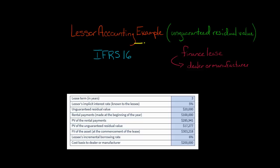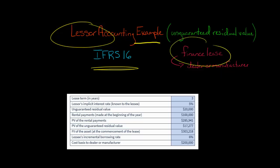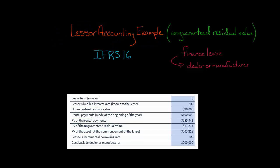In the last video, we discussed an example of how a lessor would account for a lease under IFRS 16 if it was a finance lease and the lessor was a dealer or manufacturer and there was a guaranteed residual value. Now I want to do an example where everything else is the same except we have an unguaranteed residual value. That's going to affect the amount of sales revenue and cost of goods sold that gets recognized, and it's also going to have an effect at the end of the lease if the residual value is lower than what the lessor had expected — the lessor is going to have to book a loss.